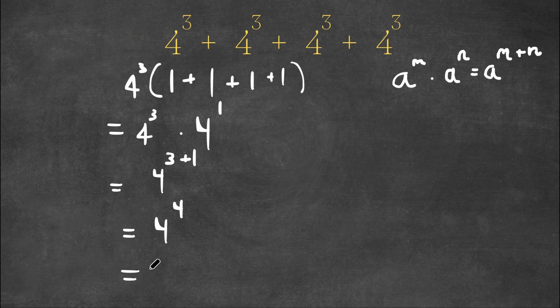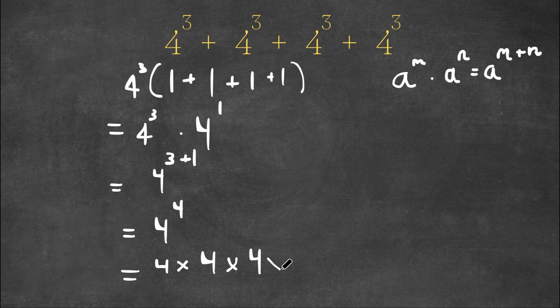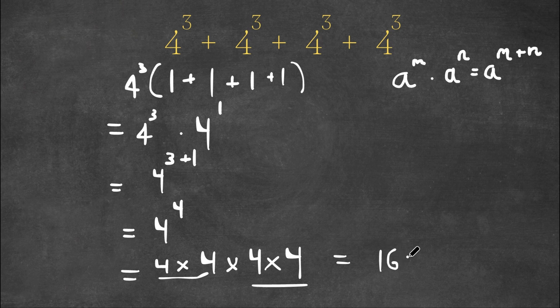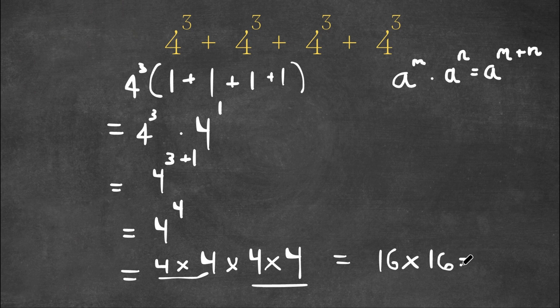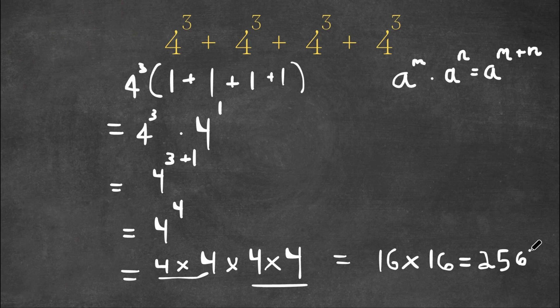Now 4 to the power of 4 is the same thing as 4 times 4 times 4 times 4. So 4 times 4 is 16, and we have 16 here and 16 here. So 16 times 16, which is equal to 256. So this is our answer.